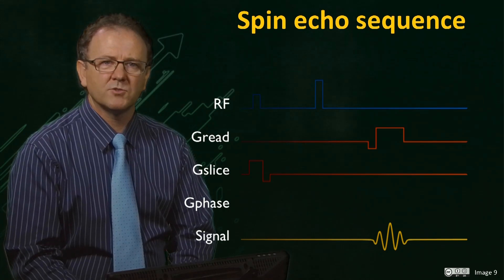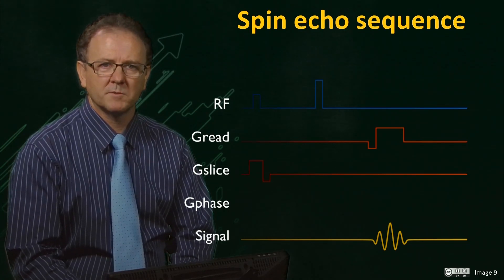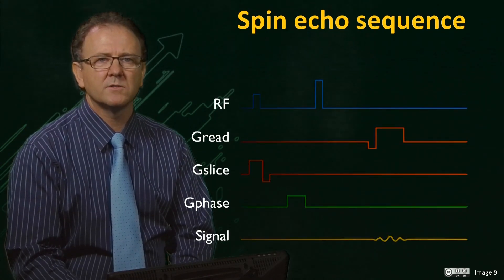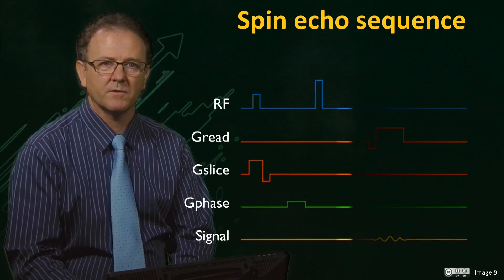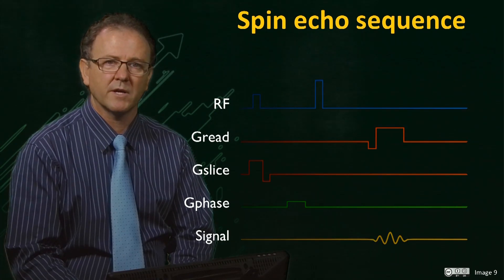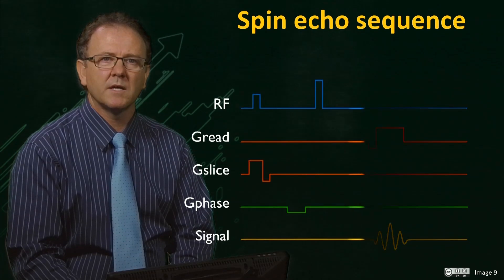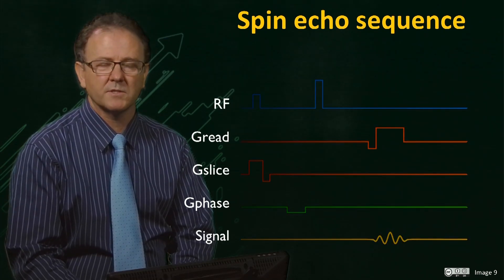So now we have constructed the complete imaging spin echo pulse sequence. The number of echoes acquired in an imaging scan determines the spatial resolution of the final image in the phase encoding direction. More phase encoding steps or increments improves the resolution, but increases the scan time.